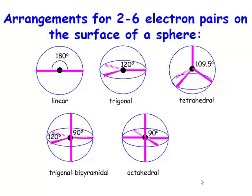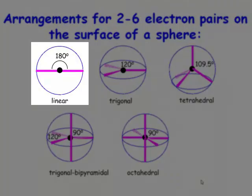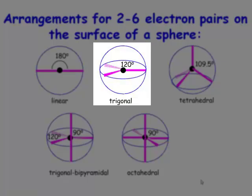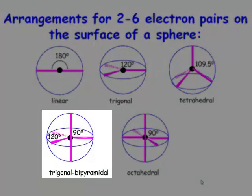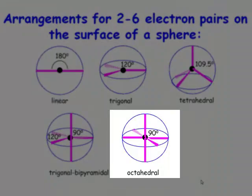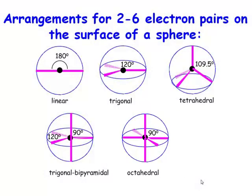If you have a steric number of two, you have a linear arrangement. If you have a steric number of three, you arrange these groups in a trigonal fashion. If you have five groups, the way to arrange them so that they're as far apart in space as possible is a trigonal bipyramid. If you want to arrange six groups in space as far apart as possible, then you're going to have a central atom with an octahedral disposition of the groups bonded to it.